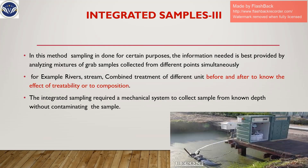An integrated sample, in simple words, is a combination of a grab sample and a composite sample. In this sampling method, grab samples are collected at different points simultaneously — for example, in a stream, river, or at different units in a combined treatment plant. This helps you understand the treatability and composition of the wastewater. An integrated sample can be collected by a mechanical or automated system, and you can collect it at a known depth without contaminating the sample.